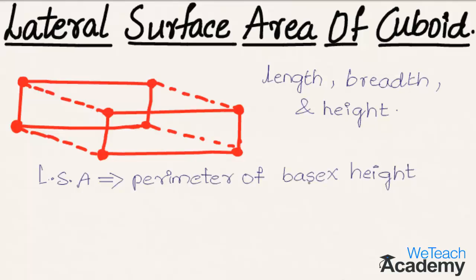Now in order to find the lateral surface area of cuboid, first let us consider the perimeter of base. Here the base is in the form of a rectangle, so perimeter of the base will be 2 times (l + b) into the height h. So we get lateral surface area as 2h(l + b) square units.